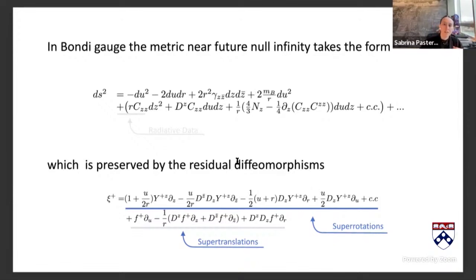If you don't mind there being punctures in the sphere, you can use a vector field Y which instead of just SL(2,C) — like a Möbius transformation — now allows any meromorphic transformation. Those are called super-rotations, and the f's are the super-translations.